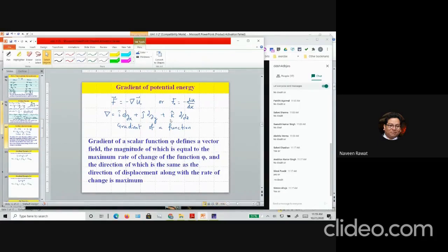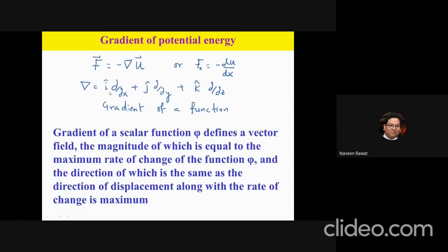It is important to note that this gradient — with its î(d/dx) form — is not a vector. It is what we call in physics an operator. This gradient operator operates on a function and gives you the derivative of that function. You must be careful: this is not a vector, it is an operator, and in physics you will encounter many different operators that act on functions.